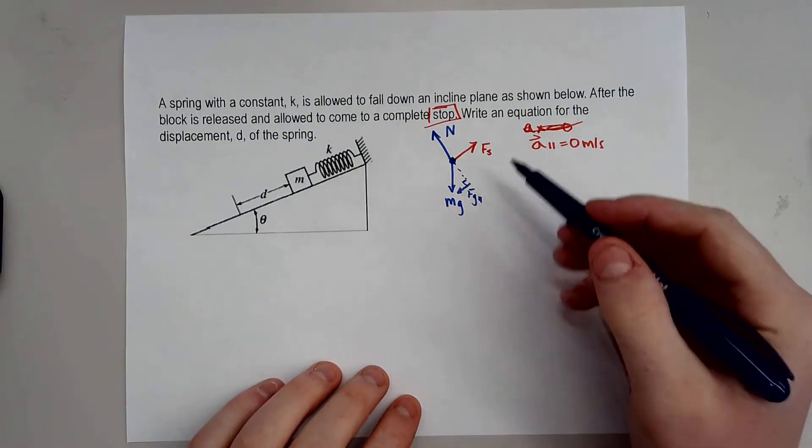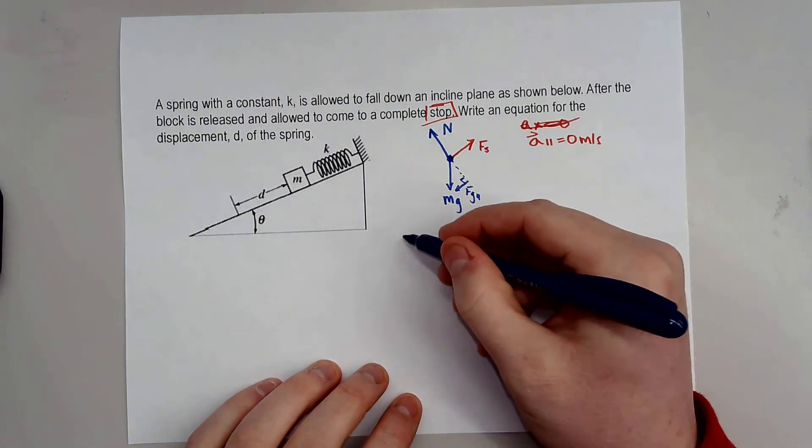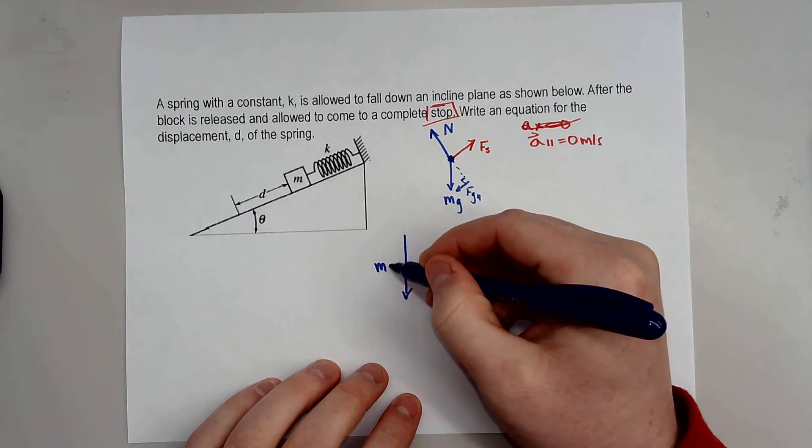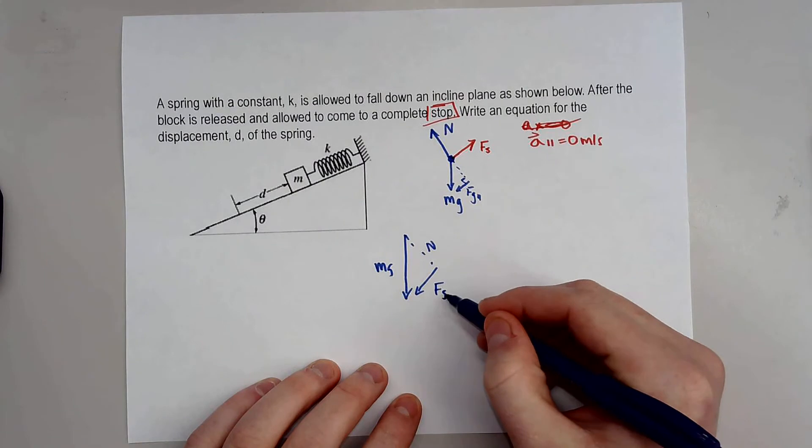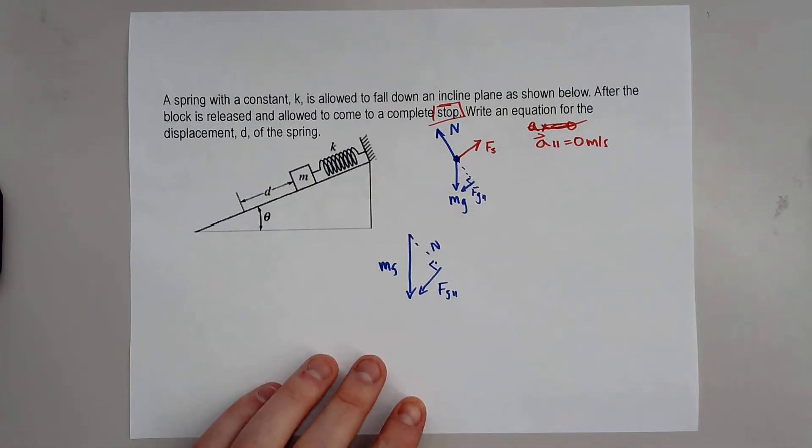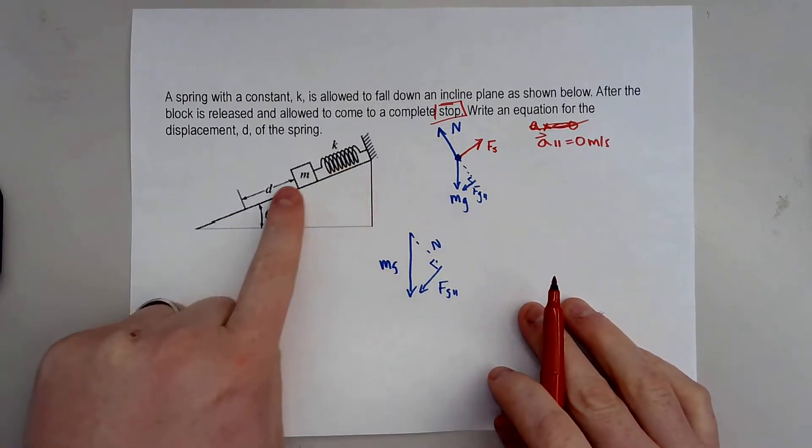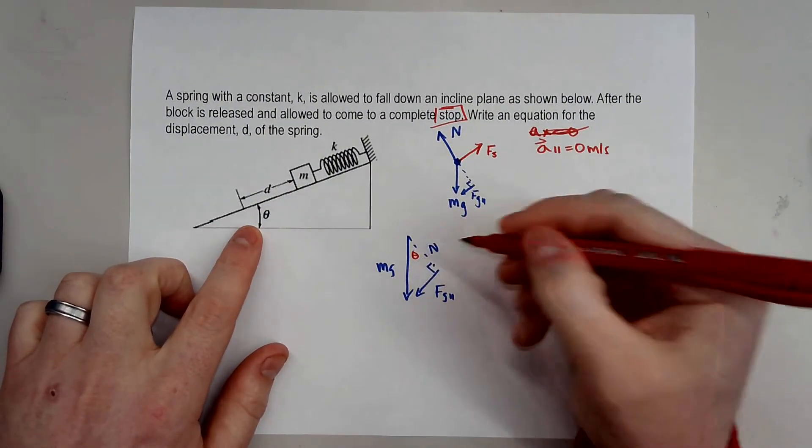So notice you have done this before with incline planes. So I'm going to kind of pull this block out here and make it a little bit bigger for the people viewing. And this is my normal force. This right here, this fg, is a component of gravity. It's not really there, but we need to find it because we need to find the forces that are going down the ramp. So this is angle theta. That means this angle here has to be theta.